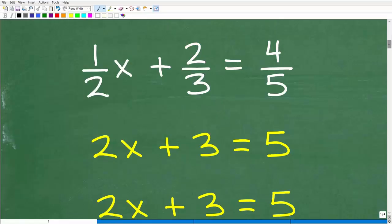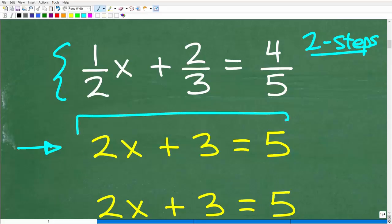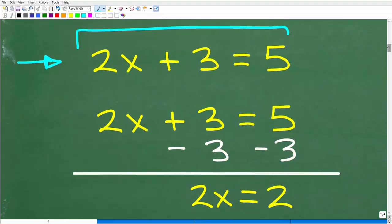All right, let's go ahead and get into this problem. And here is the situation. We have one half x plus two thirds is equal to four fifths. Now, when you first start learning algebra, this would be classified as what we call a two step equation. So what does that mean? Well, it means we need to take two steps to solve this equation.